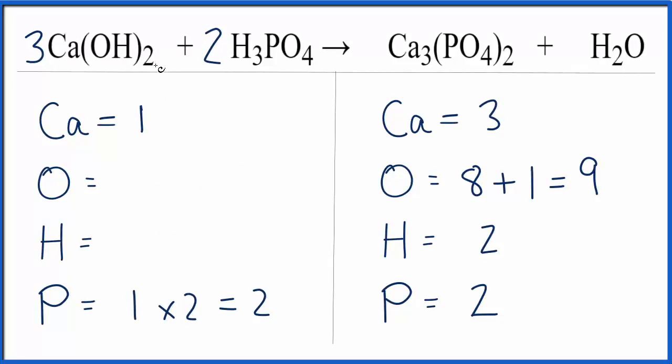For the oxygen, we have the two times the one, that's two times the three, six. Plus we have the four here times the two, that's eight. So we have 14 oxygen atoms.